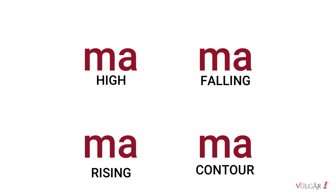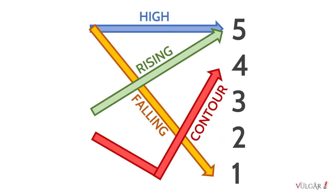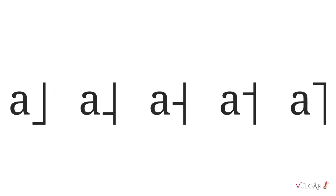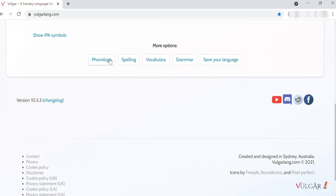Mandarin is a good case study because on closer inspection, we can see that there are actually five different tone levels at play. The International Phonetic Alphabet uses these symbols to represent the five tone levels.